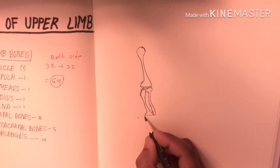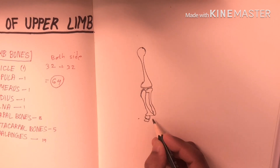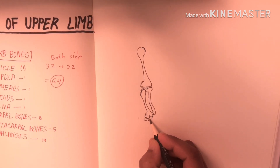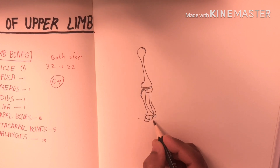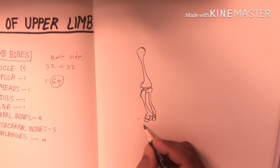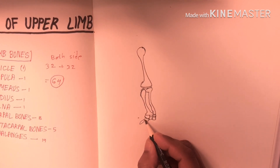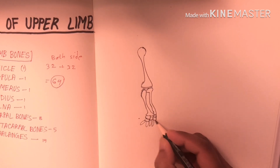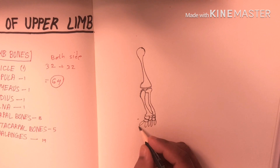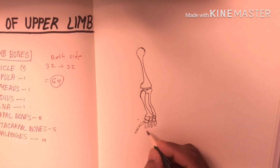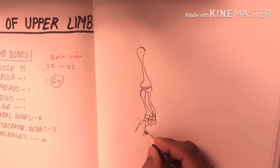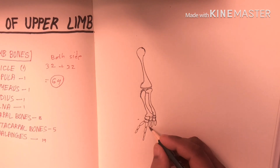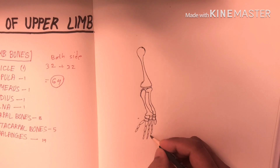Then carpal bones — we have eight carpal bones but in the diagram we can just see six. Then we have metacarpal bones — five metacarpal bones. Then phalanges — the thumb has two phalanges, but the index, middle, ring, and little finger each have three.